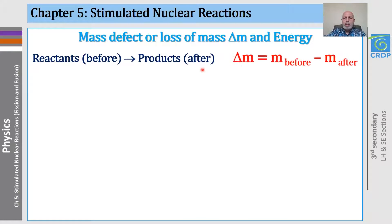This is why we define the mass defect by delta M equals the mass before the reaction minus the mass after the reaction, which is often positive, meaning that the mass before is greater than the mass after.